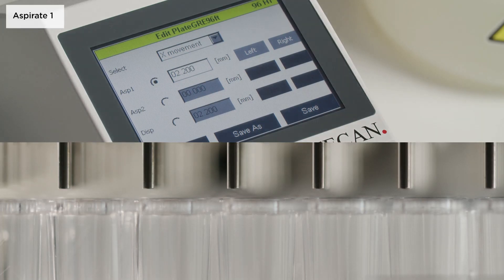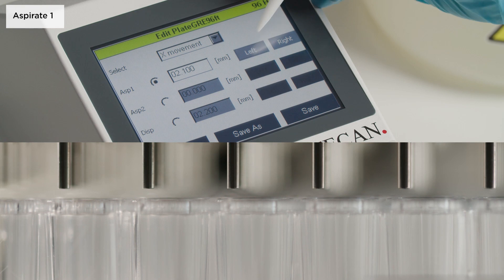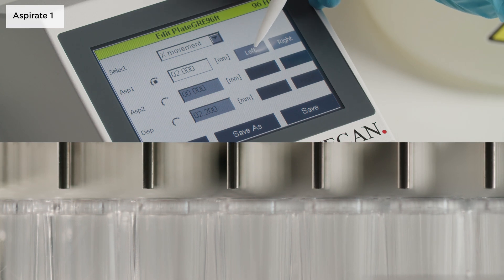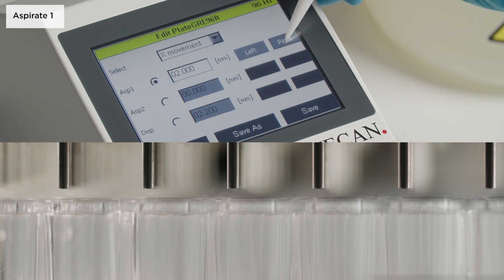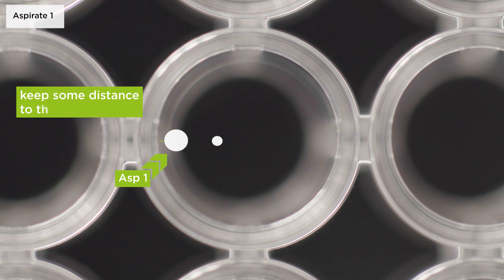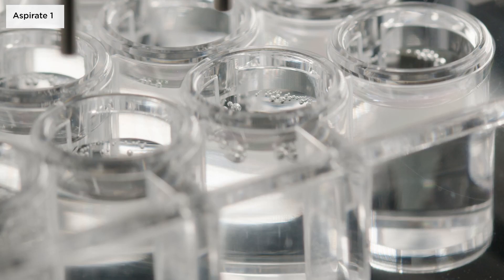The first aspiration position is available for all plate types. Use the left and right buttons on the instrument to change the needle position and visually inspect the movement in real time. For flat bottom plates, the needles are typically positioned on the left side of the wells. Make sure to keep some distance from the well border to prevent drops remaining in the well or the needles hitting the plate.